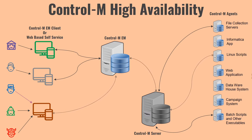Now let's say Control M Server is working fine but the server where agent machines are running goes down. That can be a single point of failure, but only for that specific application. Control M Server will still be able to execute jobs on all other available servers. Only the server where the Control M Agent has gone down loses control — so whether Control M Agent needs HA really depends on how your application is set up.